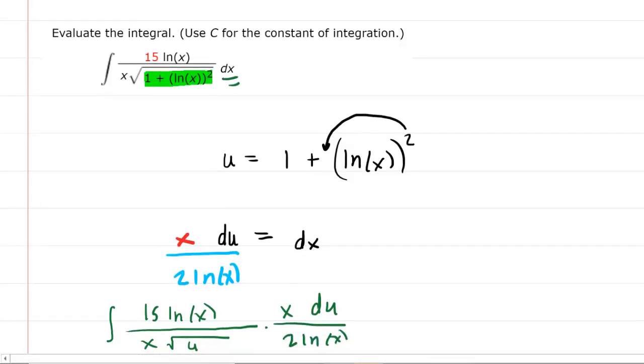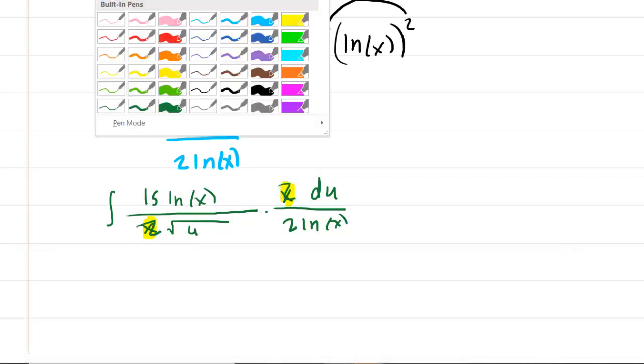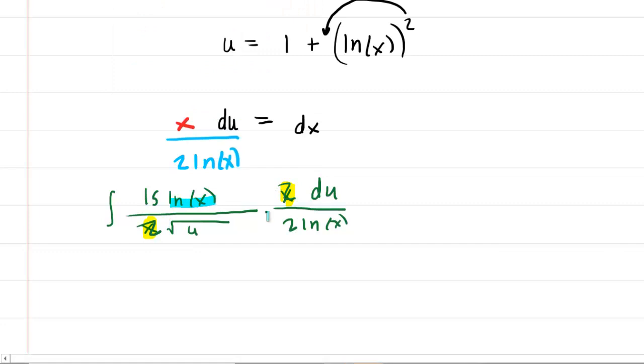This is going to work very nicely because the x's will cancel out, one in the numerator and one in the denominator. Equally conveniently, the natural log of x is going to cancel out as well for the same reason.